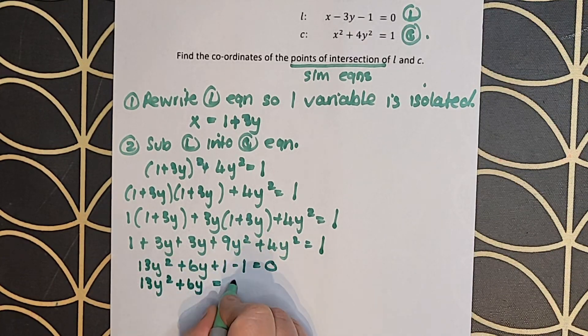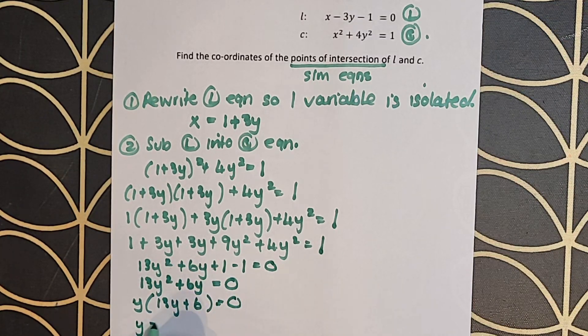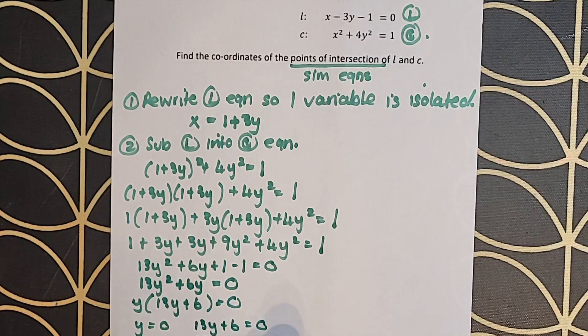I'm going to factorize out the y and I'm going to end up with y equals 0 and y equals minus 6 over 13. That was step three, solving for the first variable.